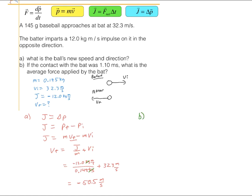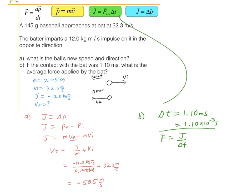The second question: if the contact time is 1.10 milliseconds — that's 1.10 times 10 to the minus 3 seconds — the average force is impulse divided by time. Plugging in minus 12.0 divided by 1.10 times 10 to the minus 3, we get about minus 10,900 newtons — the force that causes the ball to reverse its direction.